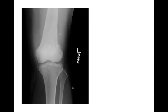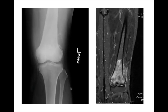Another knee frontal radiograph. This is a sclerotic, geographic lesion with a wide zone of transition. It's fairly centrally located in the metaphysis of the distal femur. Note there's some periosteal reaction. On MR we can see the extent of the lesion and there's a soft tissue component as well. This was an osteosarcoma.